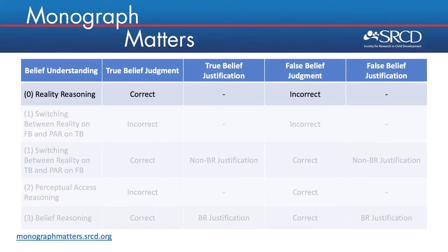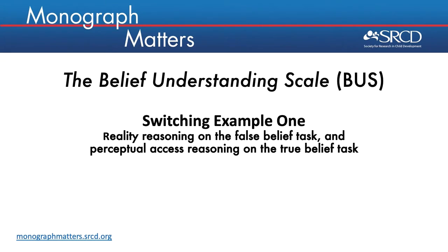As you just saw, the child was able to give a correct judgment on the true belief task but gave an incorrect judgment on the false belief task. In this next video clip, you'll see an example of a child scored as switching on the Belief Understanding Scale.